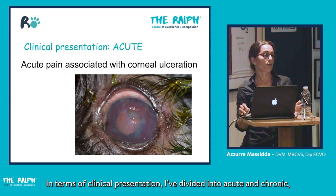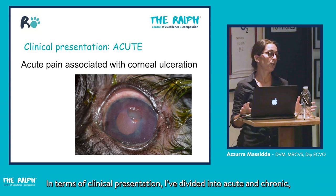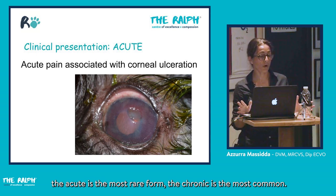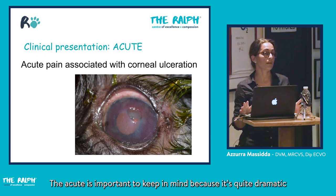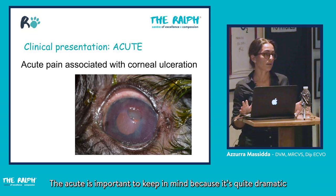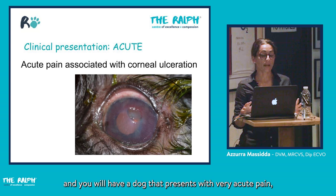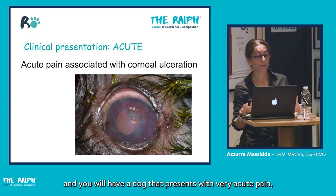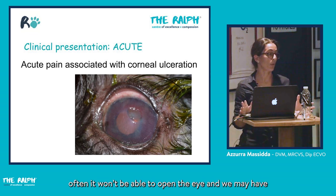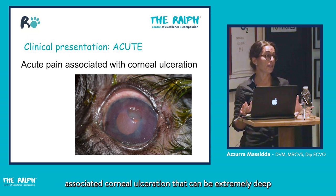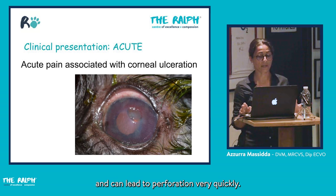In terms of clinical presentation, there is an acute and a chronic form. The acute form is rare but important because tear film production drops very quickly, and the dog presents with acute pain, often unable to open the eye, with associated corneal ulceration that can be extremely deep and can lead to perforation very quickly.